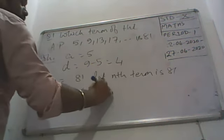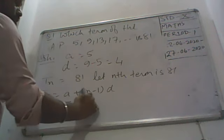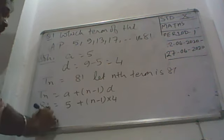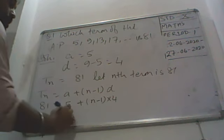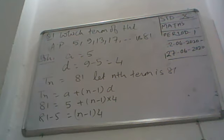TN is equal to A plus N minus 1 into D. 81 is equal to, A is equal to 5, plus N minus 1, D is equal to 4 only. So 81, so 5 is equal to N minus 1 into 4 here. So we are now getting our term here.